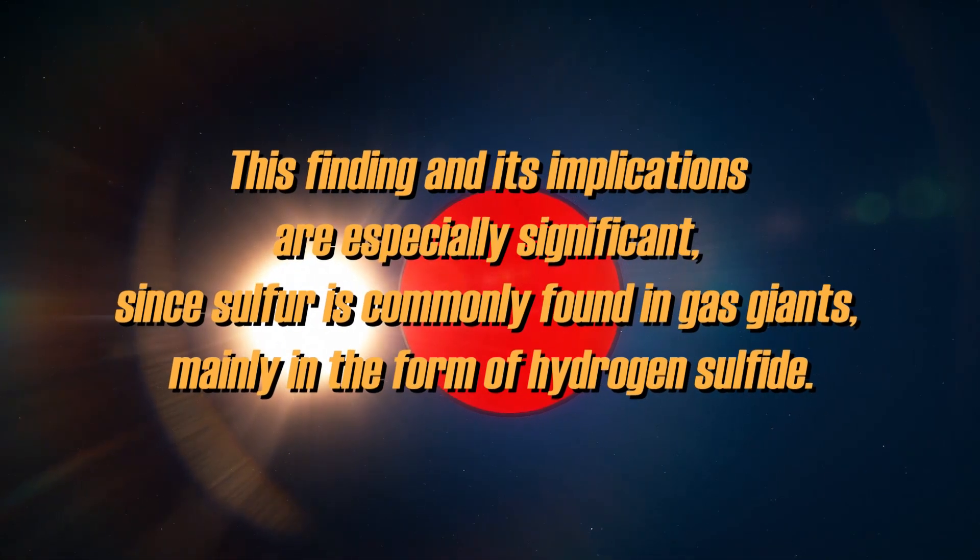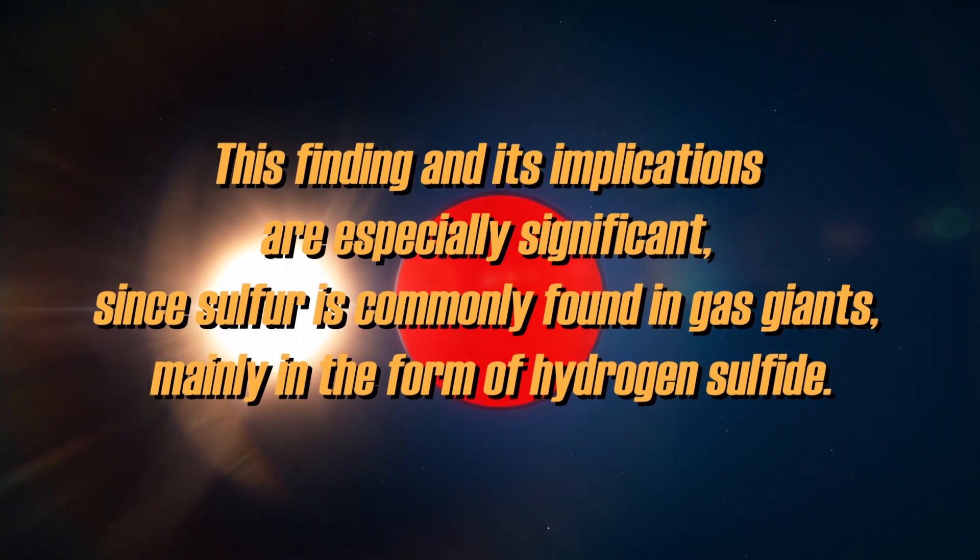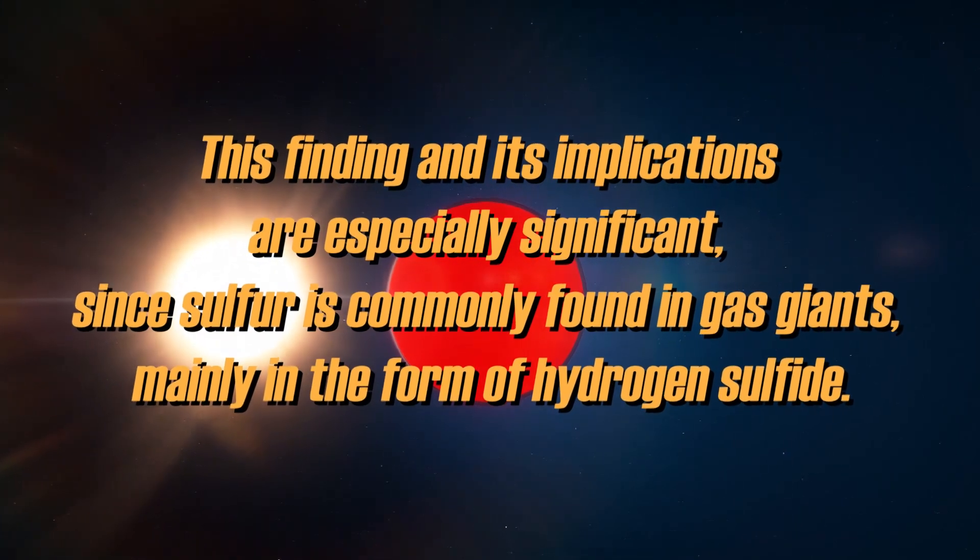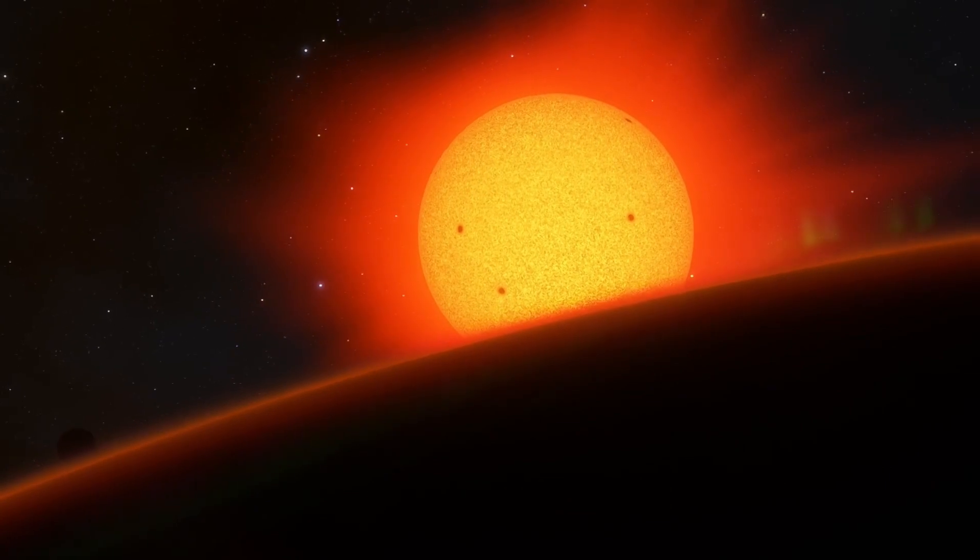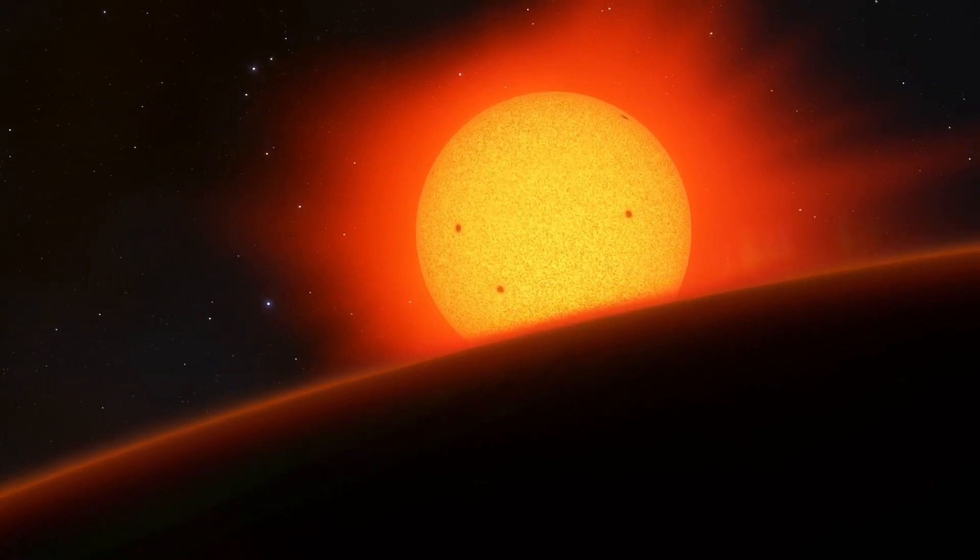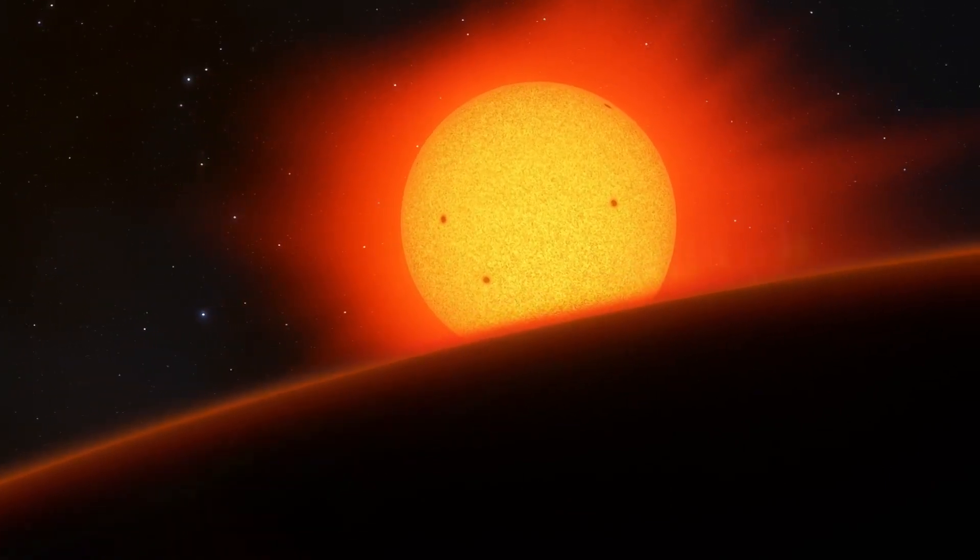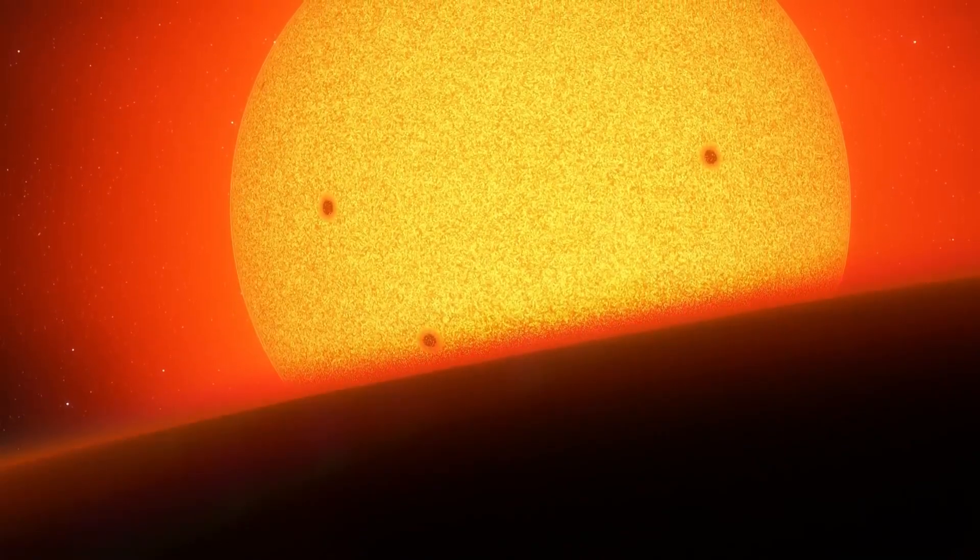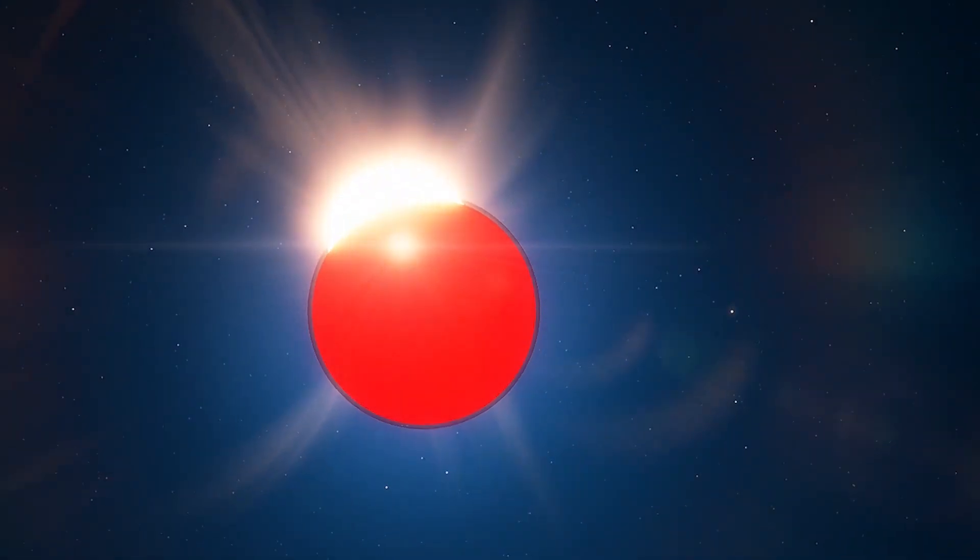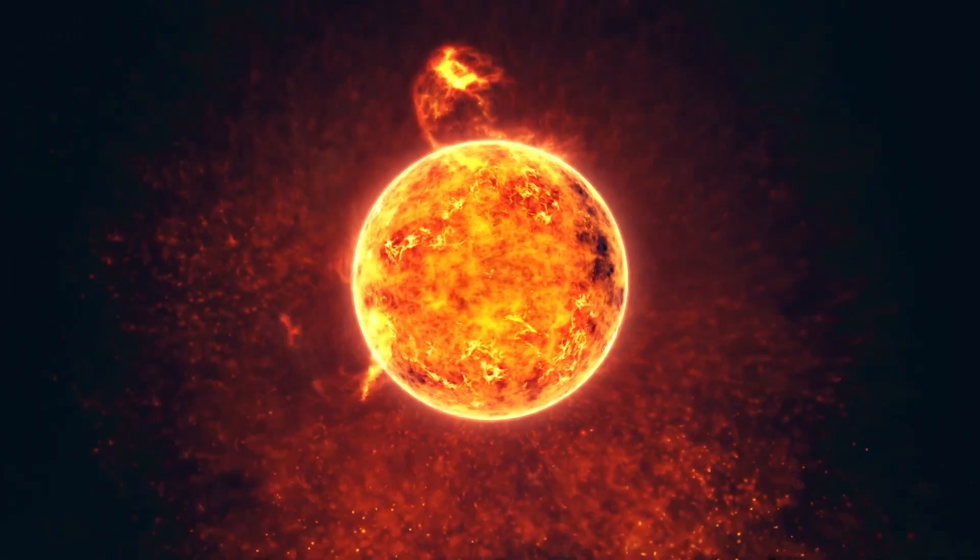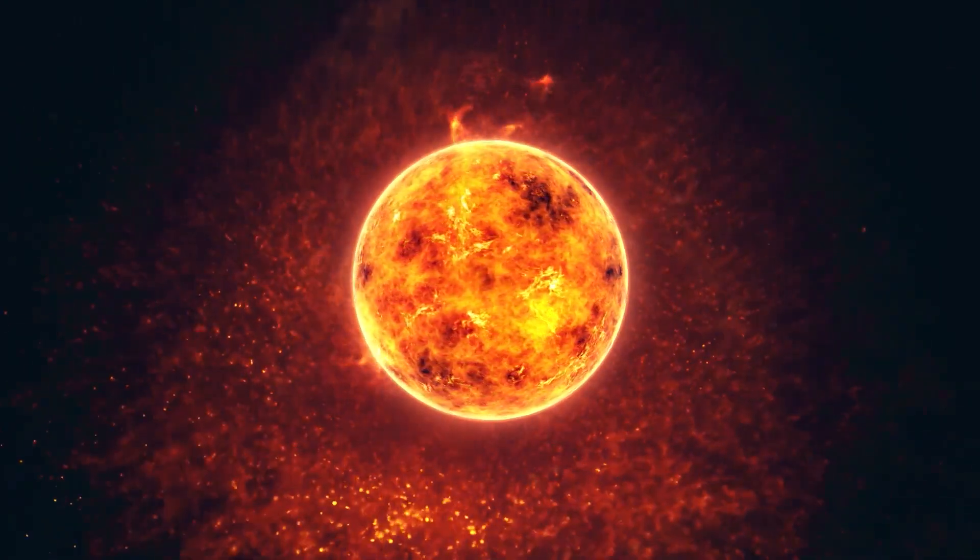This finding and its implications are especially significant since sulfur is commonly found in gas giants, mainly in the form of hydrogen sulfide. This may provide clues to the formation history of the extrasolar world in question. Consequently, the unexpectedly high content of sulfur dioxide, together with the ratios of other elements to oxygen, suggests that the atmosphere of WASP-39b contains up to 30 times more heavy elements than the sun.